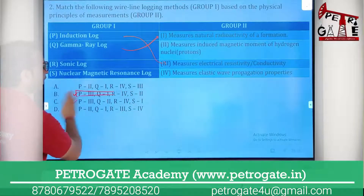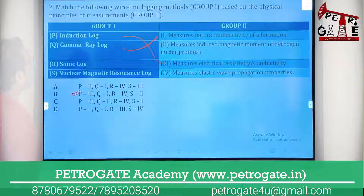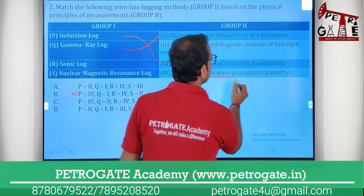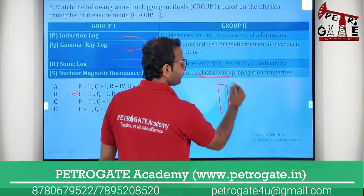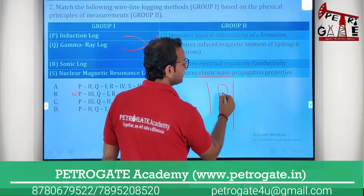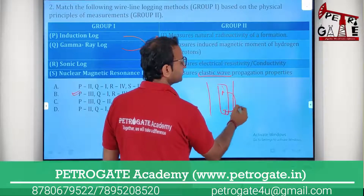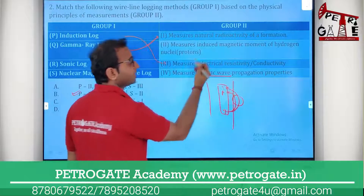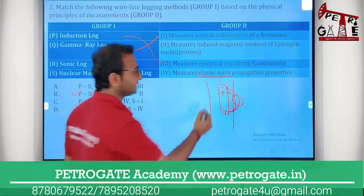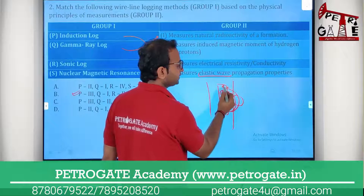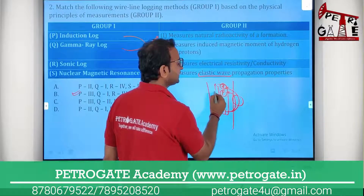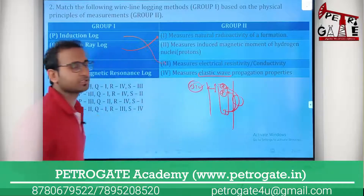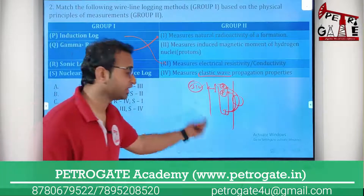Sonic log measures elastic wave propagation. The transmitter emits a sound wave, and the receiver records it. The difference in time between transmission and reception — the transit time — is what determines porosity from the sonic log.